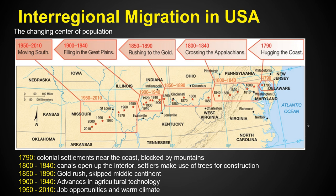We consider the changing center of population. Throughout the early part of our history, people were living on the eastern seaboard, on the east coast. And over the years, people migrated west. Let's take a look at how and why that pattern occurred. In the 1790s, we've got colonial settlements near the coast, and people are pretty much staying there because they're blocked in by the Smoky Mountains and the Appalachian Mountains. During this time period, pretty much everyone's settling along the coast because there are established settlements — that's where the center of population is.